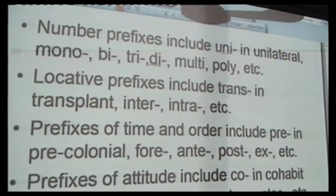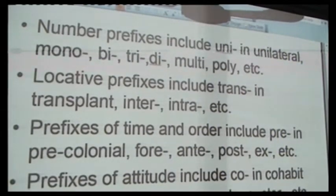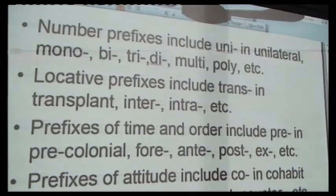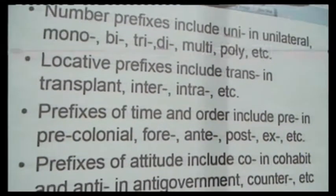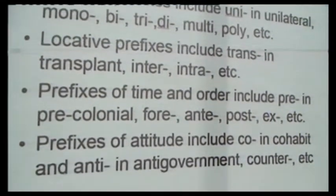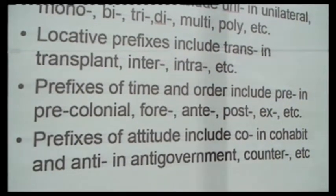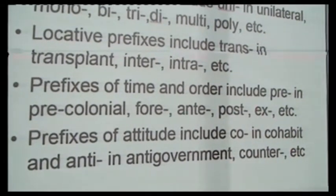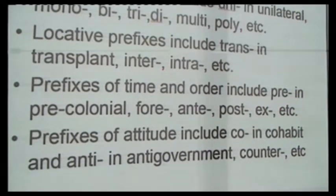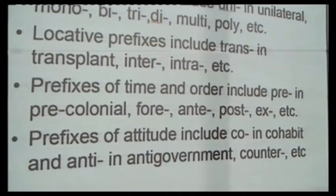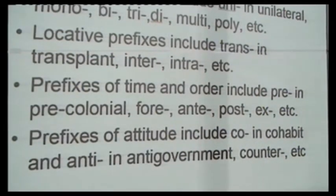We also have number prefixes such as 'mono-' in 'monocotyledon' and 'uni-' in 'unilateral.' We have locative prefixes such as 'inter-' in 'international' and 'intra-' in 'intrastate.' We also have prefixes of time and order such as 'ante-' in 'antenatal' and 'post-' in 'postcolonial.' We also have prefixes of attitude — 'co-' in 'cohabit' and 'counter-' in 'counteract.'